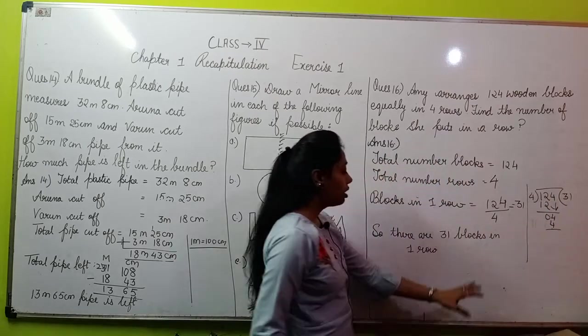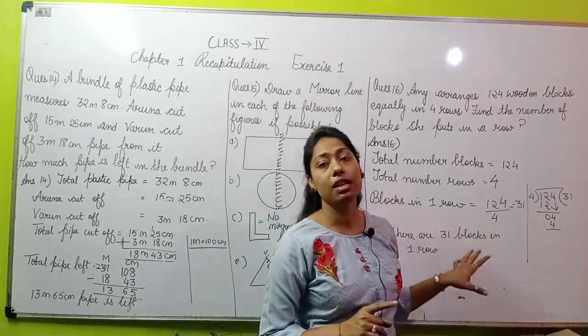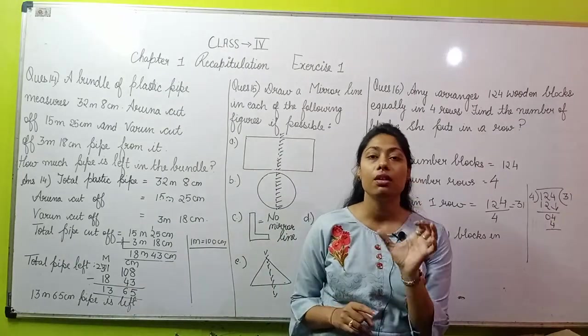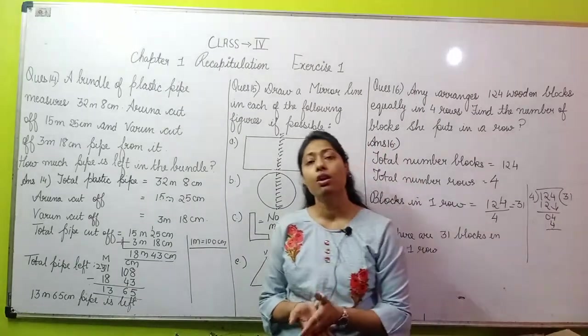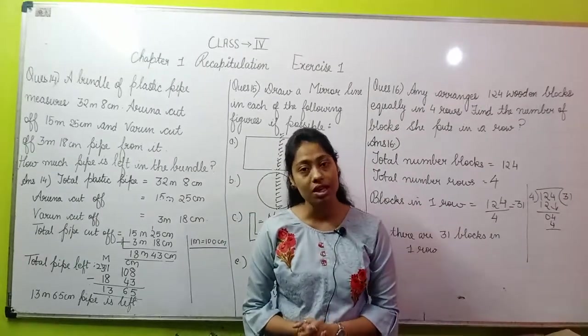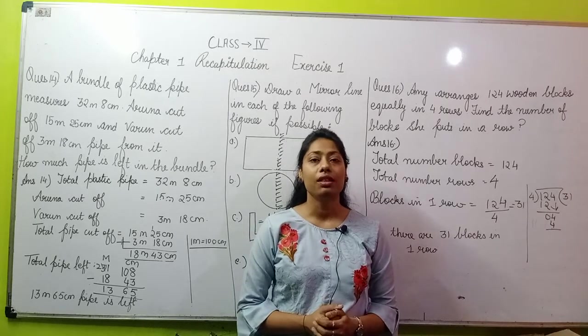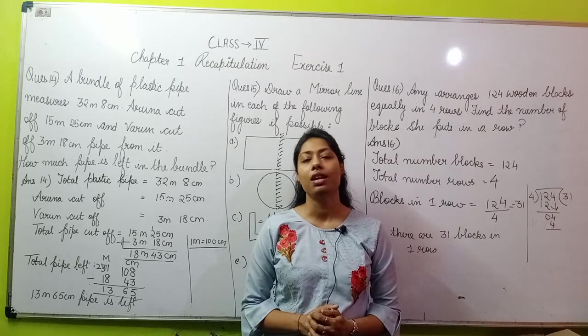4 goes into 124 equals 31. There are 31 blocks in one row. From this we found that we have 31 blocks in one row. So this was all about your question number 14, question number 15, and question number 16. That's all for today, thank you and have a very nice day.